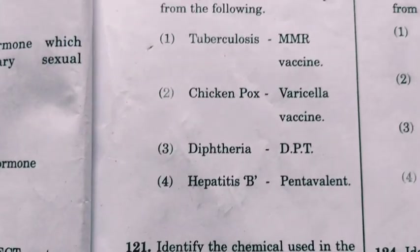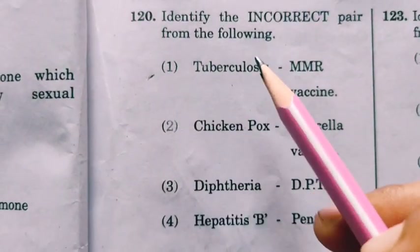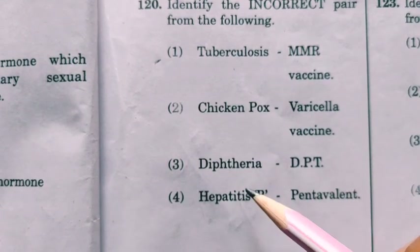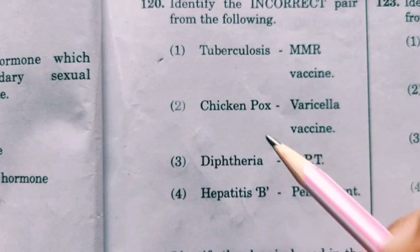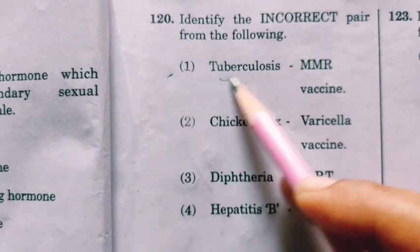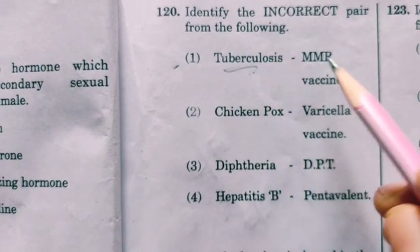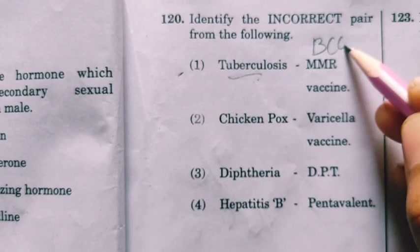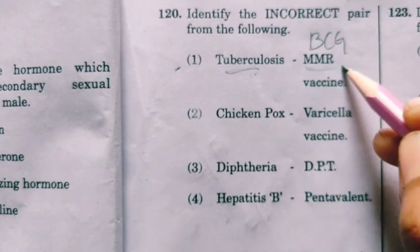Identify the incorrect pair from the following. These are diseases and their corresponding vaccines. For tuberculosis, the vaccine given is BCG, but the option states MMR — that is incorrect. So this is the incorrect pair.